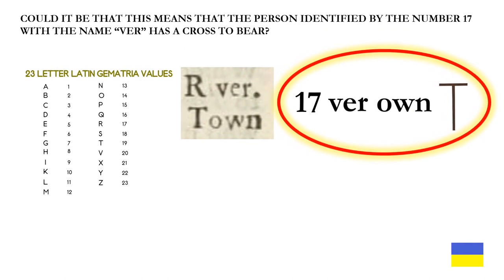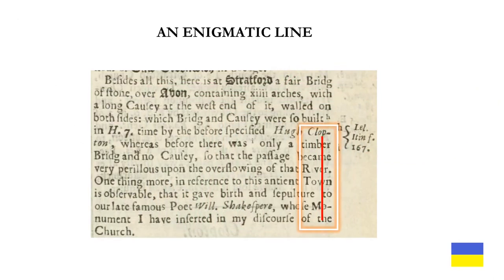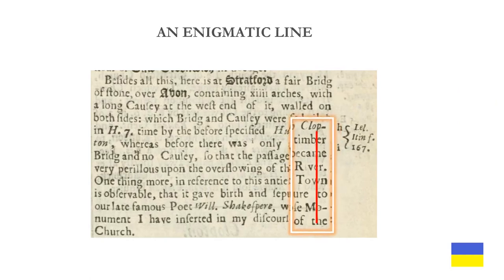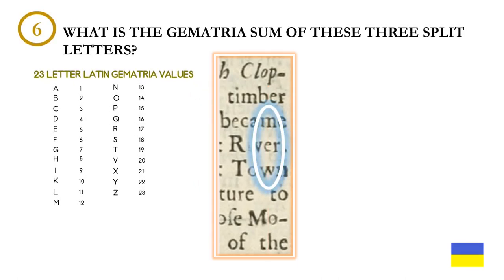Could it be that this means the person identified by the number 17 with the name V-E-R has a cross to bear? Here we have an enigmatic line. These three letters are perfectly split down the middle by the line from the lowercase p in Clopton to the lowercase h in 'the.' What is the gematria sum of these three split letters? Keep both lowercase v's intact because they are split by that line.